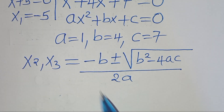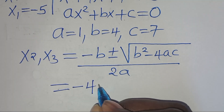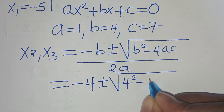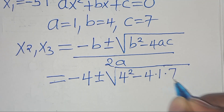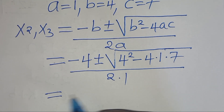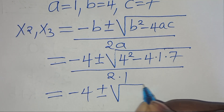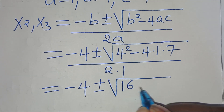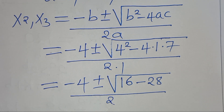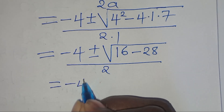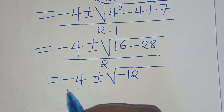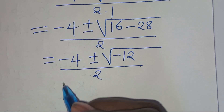Substituting a, b, and c, we have minus 4 plus or minus the square root of 4 squared minus 4 times 1 times 7, everything divided by 2 times 1. So we have minus 4 plus or minus the square root of 16 minus 28. 4 squared is 16, and 7 times 4 is 28. Everything here divided by 2, giving minus 4 plus or minus the square root of negative 12, over 2.